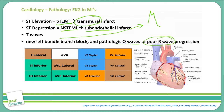Finally, changes in V3 and V4 are indicative of an anterior wall MI, typically associated with the distal portions of the left anterior descending artery.